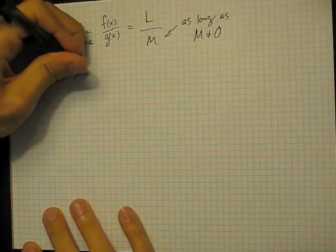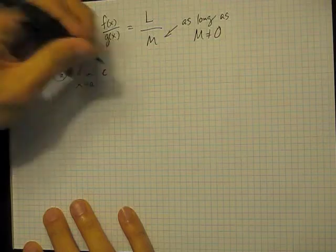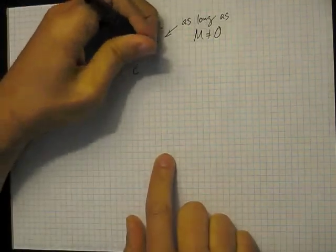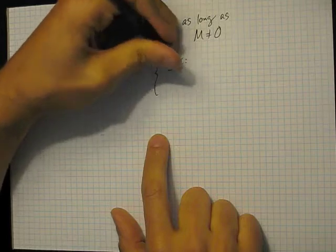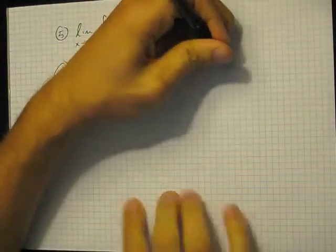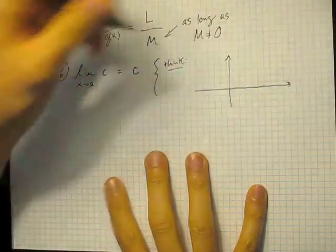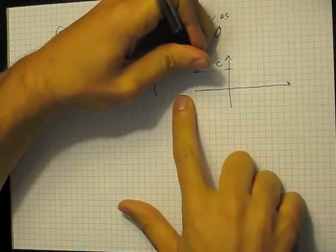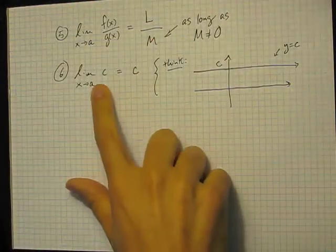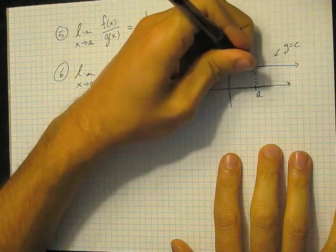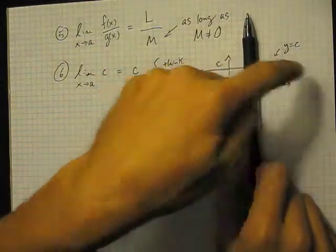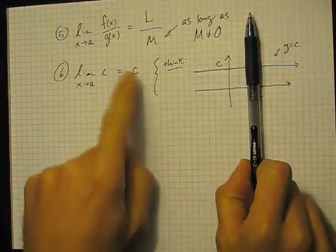The limit as x goes to a of a constant is equal to the constant itself. Think about this: the question of what a limit is, is the question of what its trending behavior is. If we have the graph y equals c, and a is just a number, we're looking at the trending behavior. There is no change in this graph — it's just constantly at height c. So the trend is c, so the limit is c.